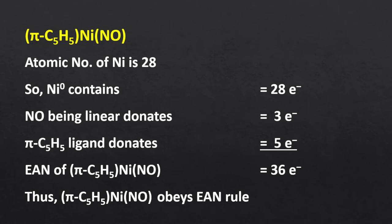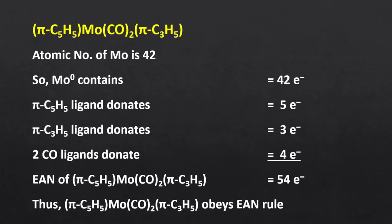Nickel nitrosyl cyclopentadienyl: nitrosyl bonded to 3d transition metal (nickel) is linear, donating 3 electrons. So 28 from nickel, 3 from linear nitrosyl, 5 from cyclopentadienyl — EAN = 36, stable. Molybdenum complex (atomic number 42, oxidation state 0): 42 from molybdenum, 4 from 2 carbonyls, 3 from pi-allyl, 5 from pi-cyclopentadienyl — EAN = 54, stable. Similarly, the second molybdenum complex: 42 from molybdenum, 6 from 3 carbonyls, 1 from sigma-allyl, 5 from pi-cyclopentadienyl — EAN = 54, stable.